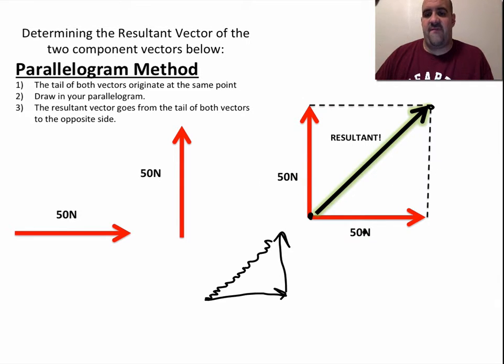This side's 50. We know this side's 50. This is 50, 50. Actually, since all the sides are going to be equal, all of these are going to be 90 degree angles. These should all be 45 degree angles. That's another method of vector resolution.